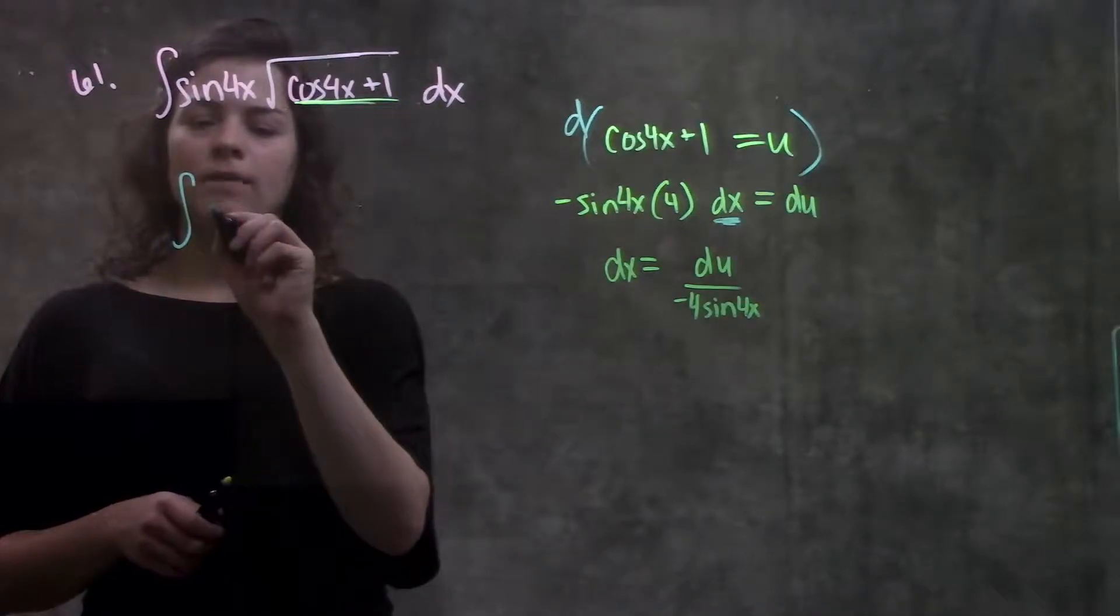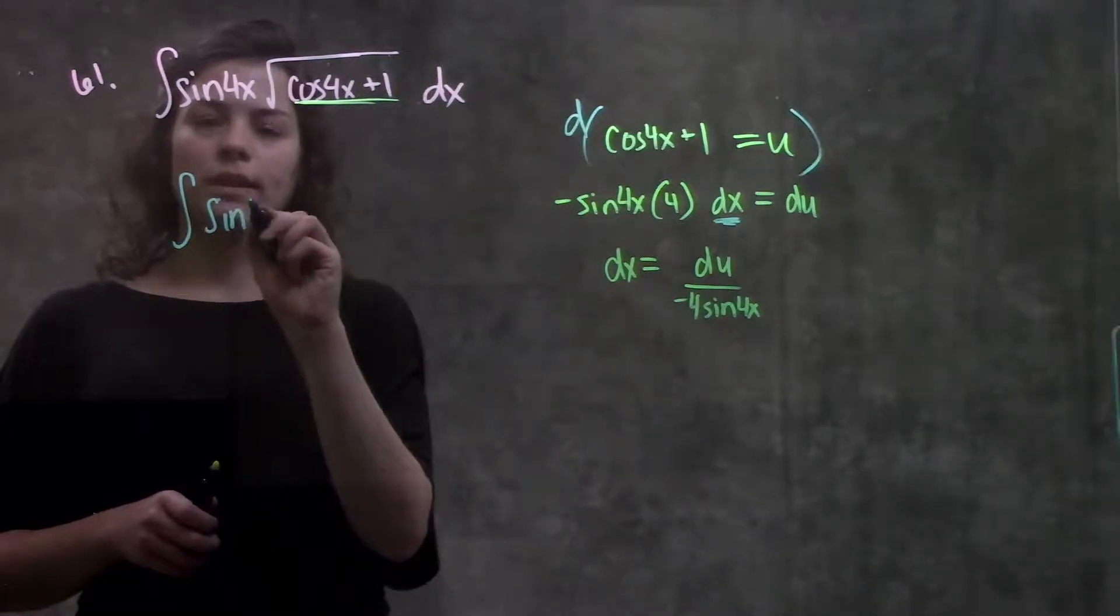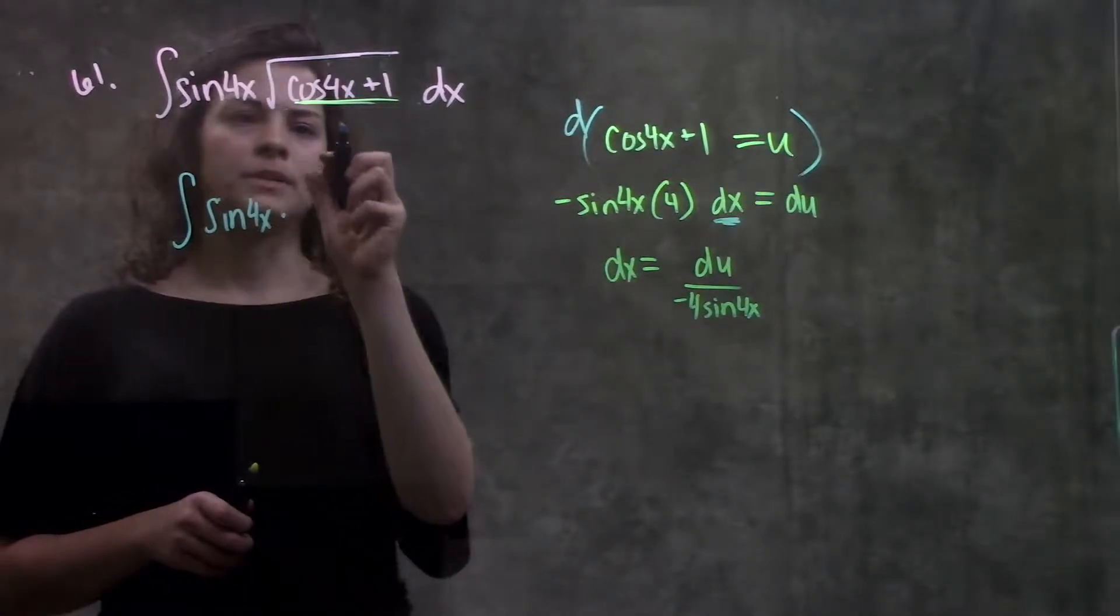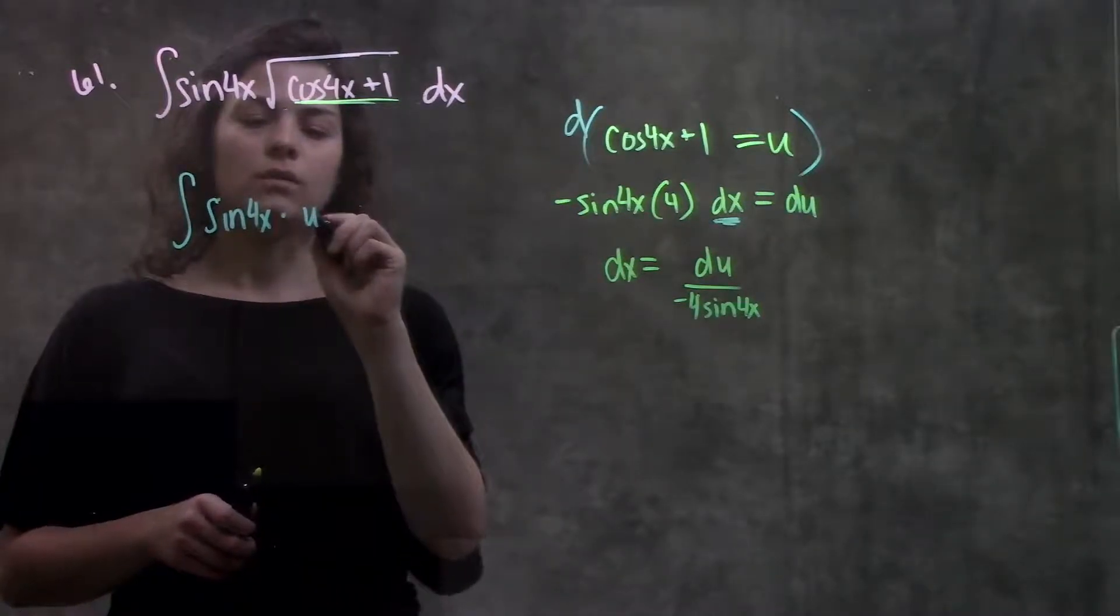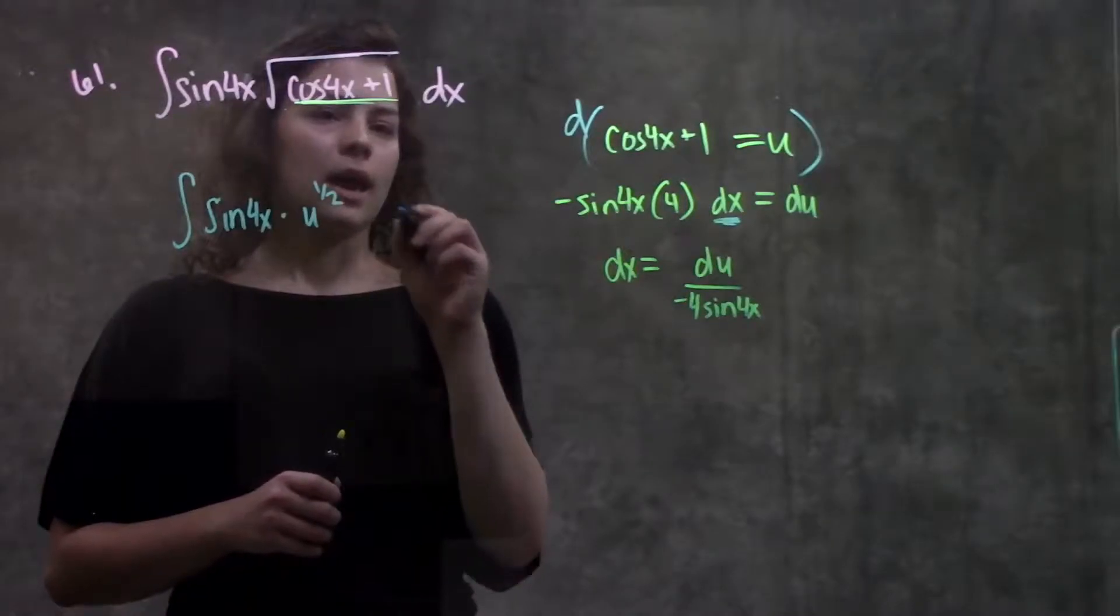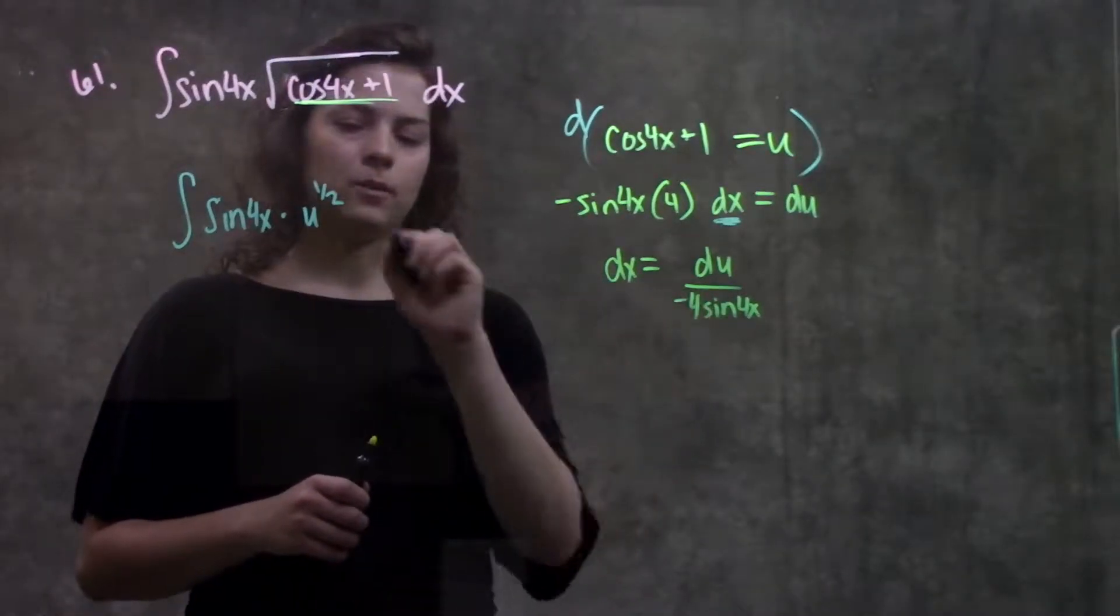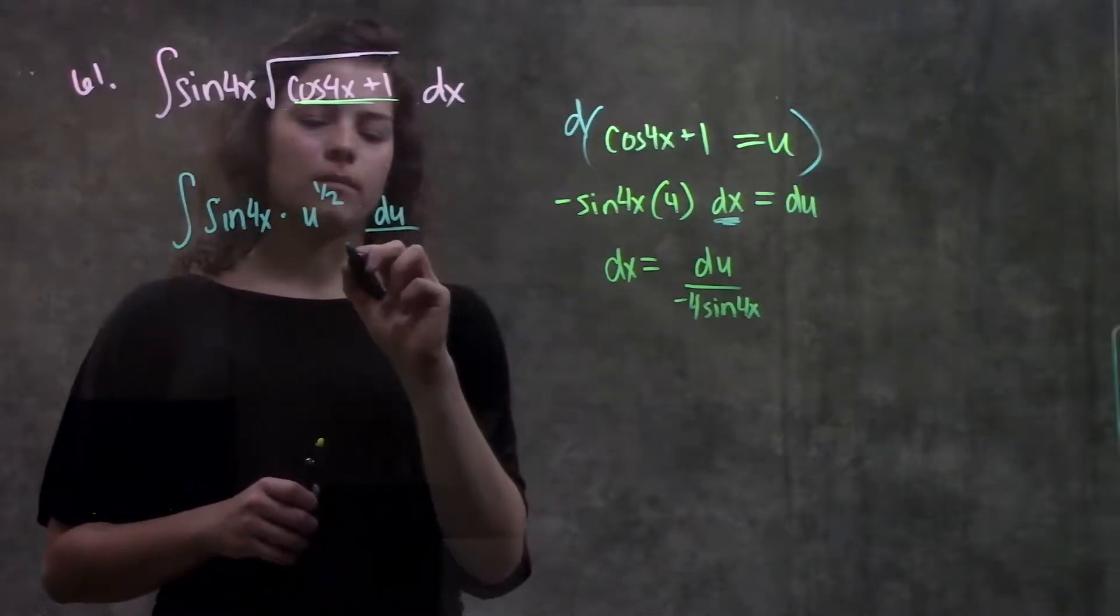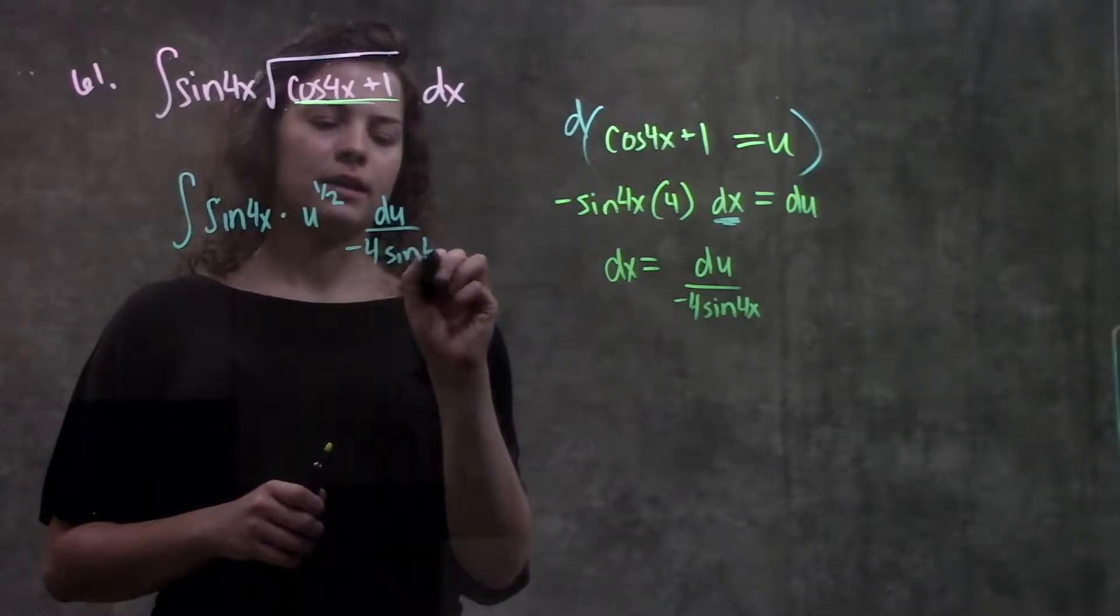So plugging in all my values, I get integral of sine 4x times this becomes u. I'm going to rewrite the radical as 1 half. And then remember my dx is equal to du over minus 4 sine 4x.